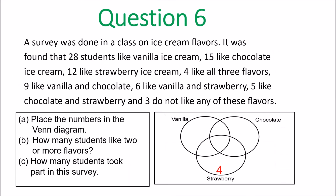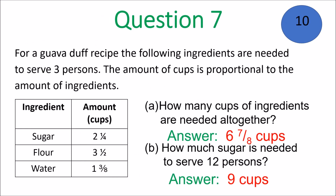Question 6: put in the numbers — start with the middle with 4, put in the rest of the numbers, there you go. The answer for how many students like two or more flavors is 12. Question 7: 8 cups for A and 9 cups for B.